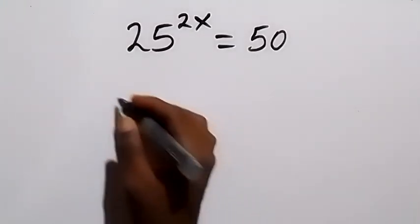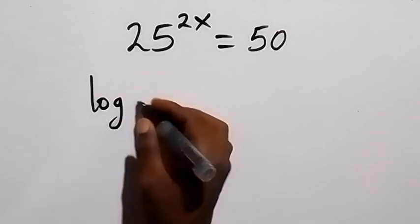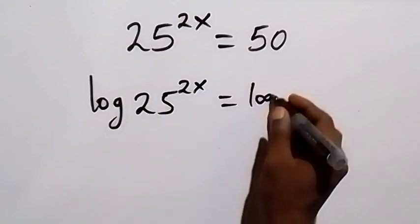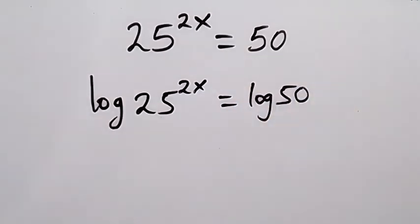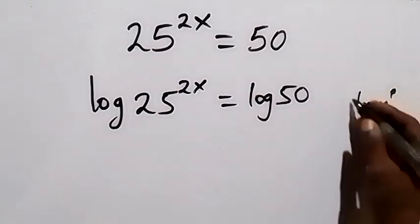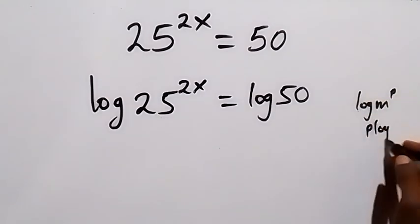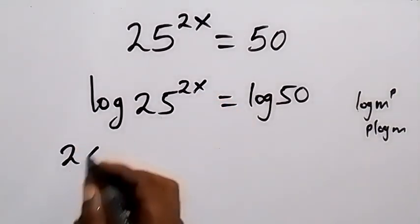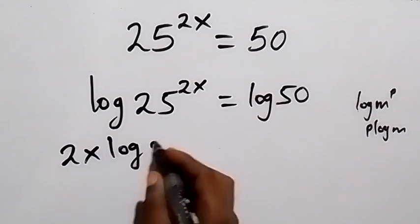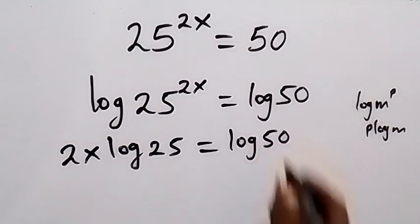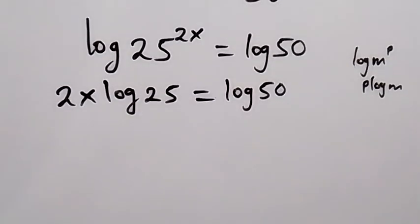From here, let's take the log on both sides. We have log 25 raised to power 2x equals to log 50. From the power law of logarithms, when we have log m raised to power p, we can take p to the front, and this becomes p log m. So using that here, 2x comes to the front and this becomes 2x log 25, then equals to log 50.